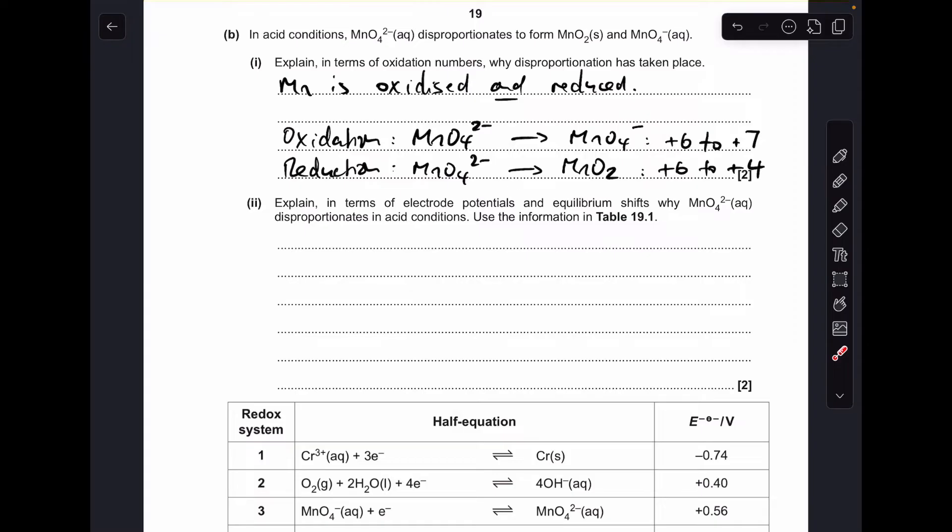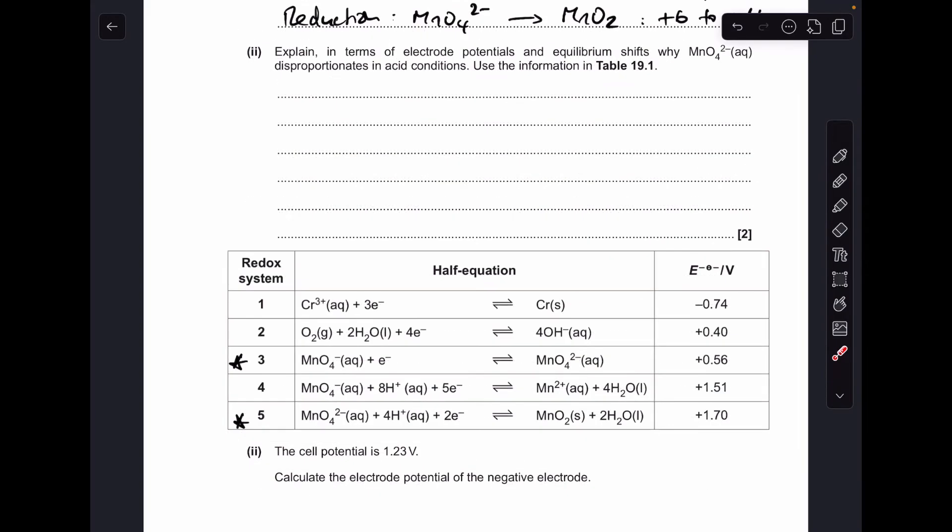Moving on to part B, you've got to explain why this conversion of MnO4²⁻ to MnO2 and MnO4⁻ is disproportionation. Well, that's because the manganese is oxidized and reduced in that reaction. The oxidation process is going from that MnO4²⁻ to MnO4⁻. That's because the oxidation number of manganese goes from +6 to +7, so it's gone up, so that's oxidation. Reduction is the MnO4²⁻ going to MnO2, and that's because we're going from +6 oxidation state to +4.